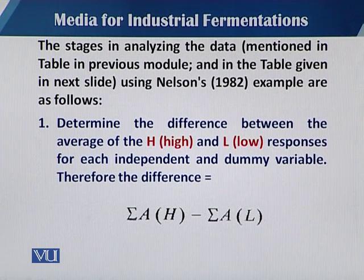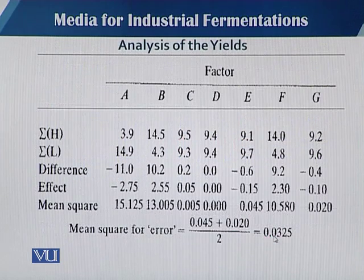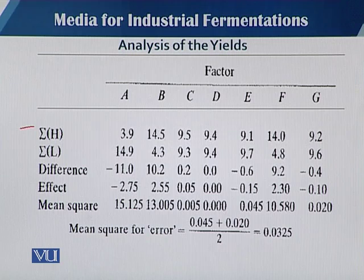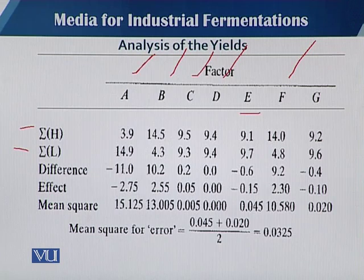For all variables, you can see in this analysis of yield table the high and low responses in each case: A, B, C, D, F, and the dummy variables E and G.